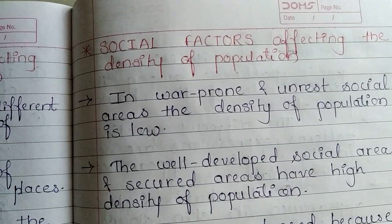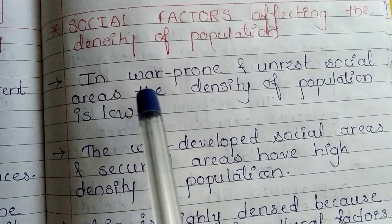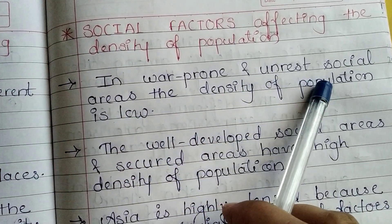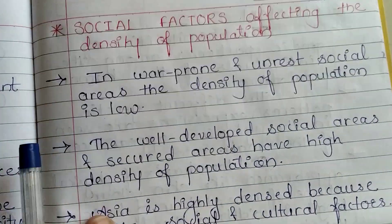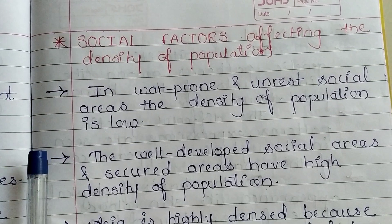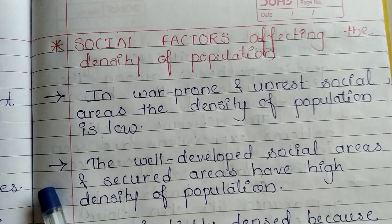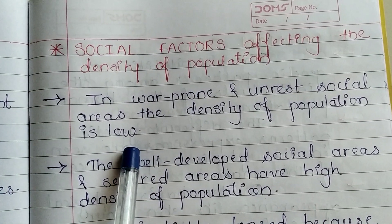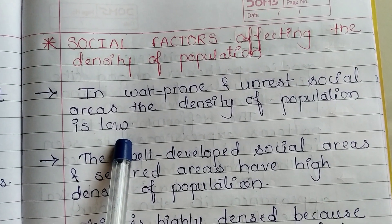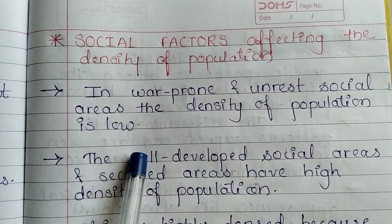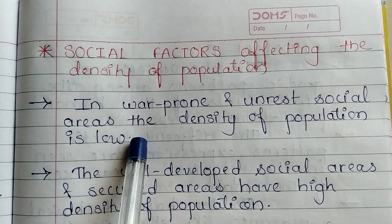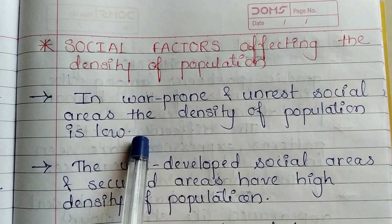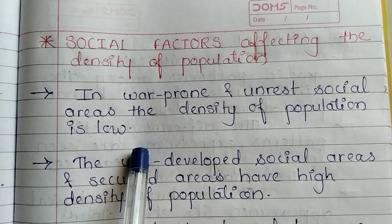Now the social factors that affect the density of population. In war-prone and socially unrest areas, the density of population is low. If there is a country or area where war-prone situations are always created, the density of population is low. For example, in India, Jammu and Kashmir experiences war attacks, and because of that the population is very less there.